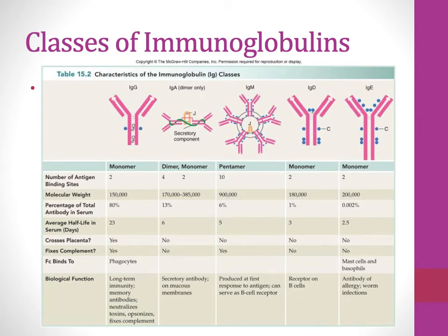With IgA, this is a dimer, so each monomer has two binding sites — giving you four binding sites total. IgM is a pentamer, with five monomers complexing together. Each has two binding sites, so you have 10 binding sites. Though you have more binding sites, IgM actually tends to have weaker affinity — weaker binding to the antigen — which is one reason it needs so many binding sites. IgM is usually what's found on the first response, early on.